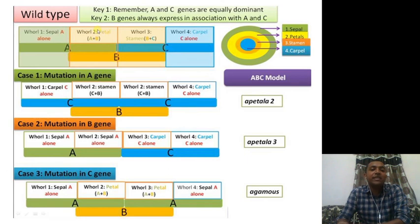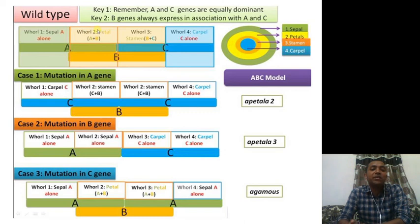Whorl three remains B and C, so it stays the same — a stamen. Whorl four remains C, also unchanged. In whorl two, instead of A plus B we now get C plus B, resulting in a stamen. So with mutation in gene A, whorl one and whorl two both develop into stamens. This condition is known as Apetala 2.